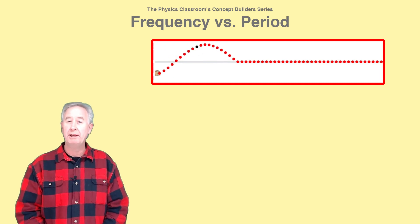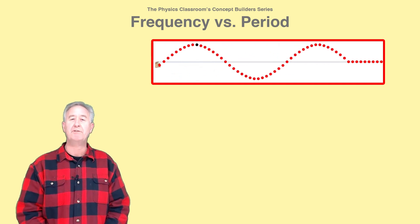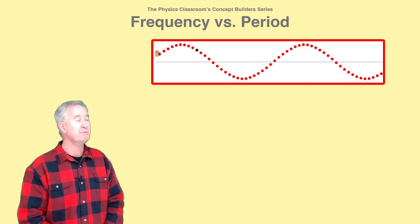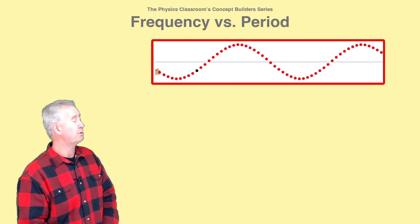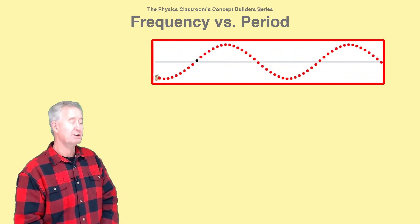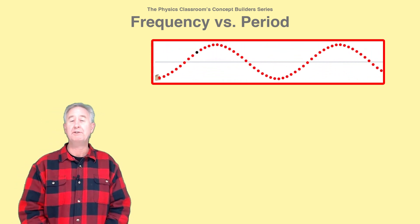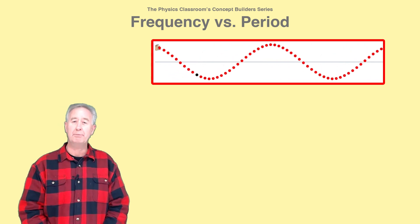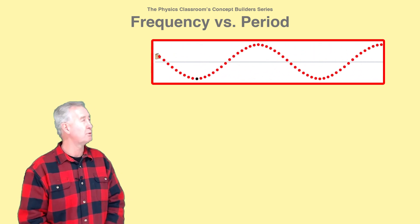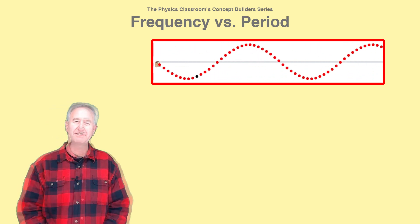Waves are repeated and periodic disturbances of a medium that cause particles of the medium to vibrate back and forth about a fixed position. Two quantities, frequency and period, describe the vibrational motion of these particles.